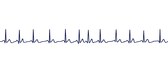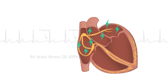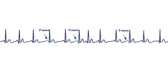Here is a rhythm strip of someone in a multifocal atrial tachycardia rhythm. You'll notice P waves which all have different shapes or morphologies. These different shapes indicate a different site of origin of electrical atrial depolarization. This is a defining characteristic of this arrhythmia.